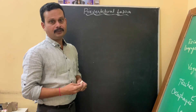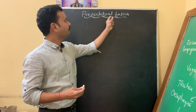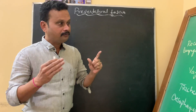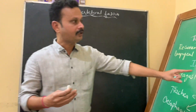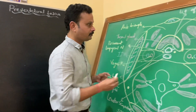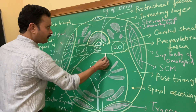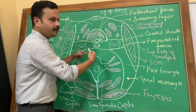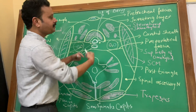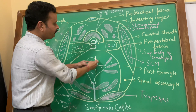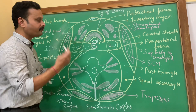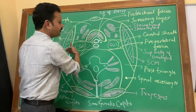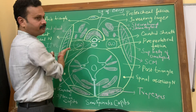Let us now study about the pre-vertebral fascia. We will talk about the horizontal extent of the pre-vertebral fascia. Pre means in front — in front of the cervical vertebra. It is a fascia which is extending transversely, and that is the pre-vertebral fascia.